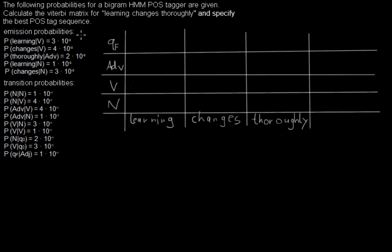We have here some probabilities given — some emission probabilities which were retrieved from the text. In this case it would mean that we had some amount of nouns, and the amount that the nouns were used to tag the word 'changes' was about 3 times 10 to the minus 3, so in 3 thousandths of the cases.